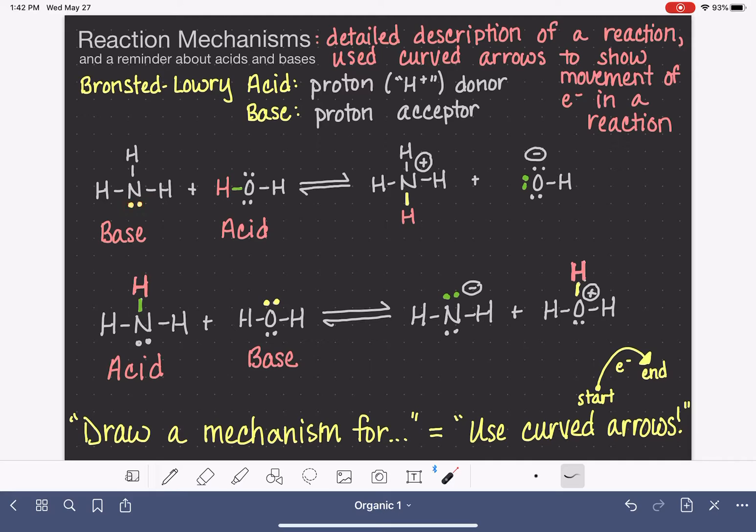are being used to form the nitrogen-hydrogen bond, which means that those electrons are actually reaching out and grabbing the hydrogen atom from the water molecule. That's one of the curved arrows for this reaction.